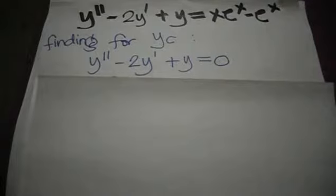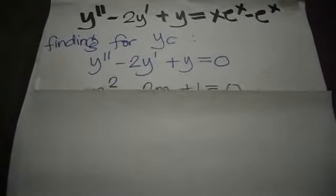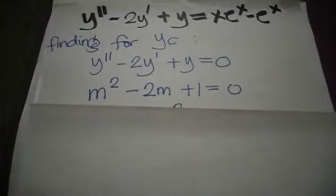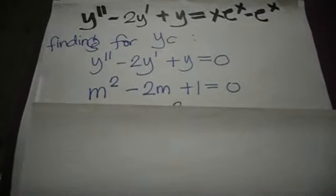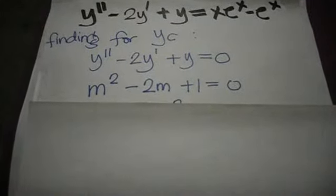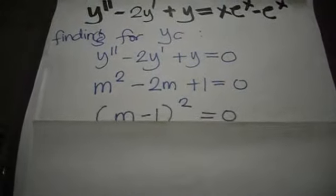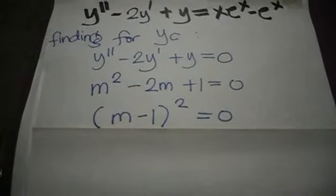Then we will find the auxiliary equation given in this form: m² - 2m + 1 = 0. From there we can get the values of m by factoring. We get (m - 1)² or getting the roots we get m1 and m2 is equal to 1.